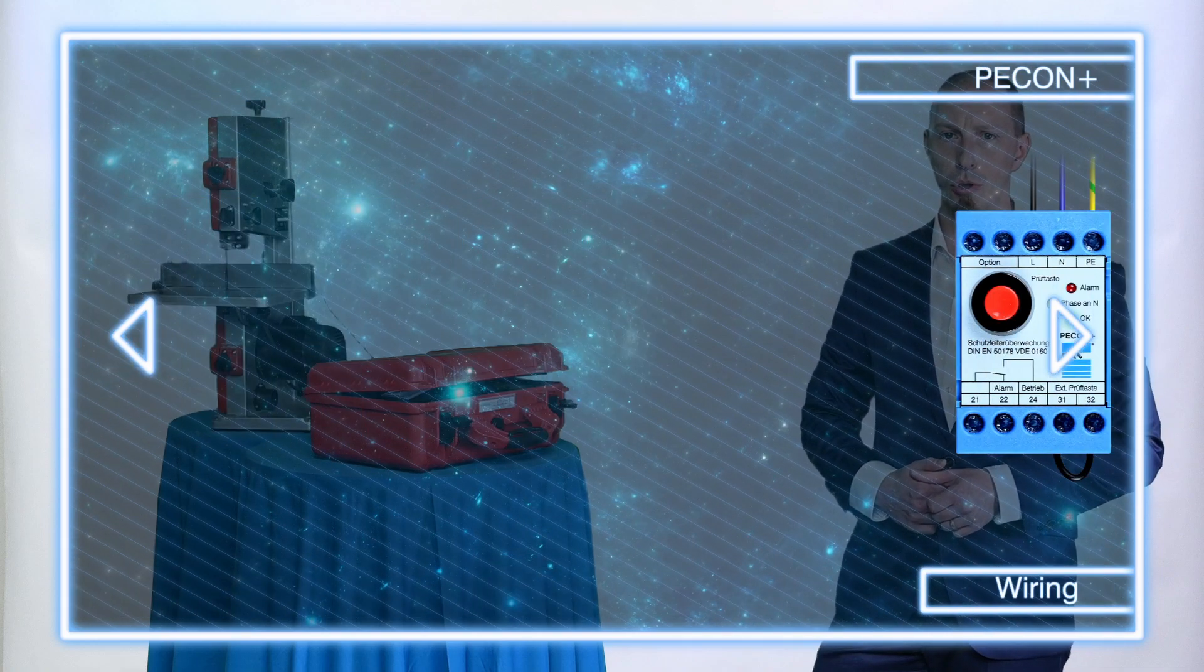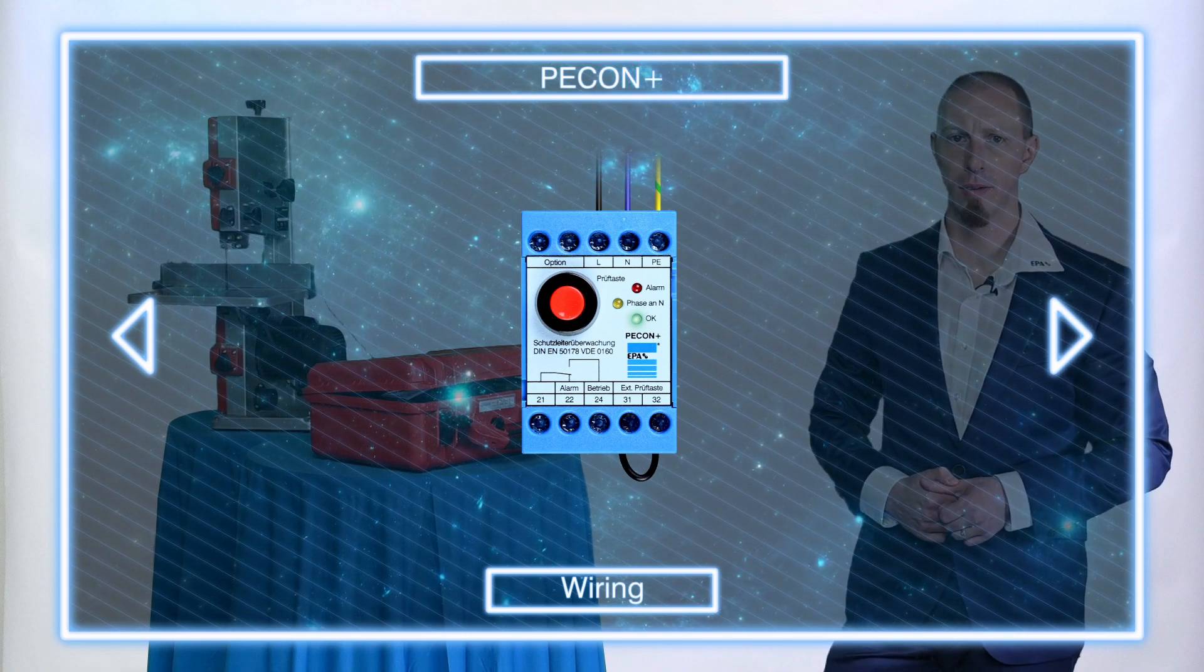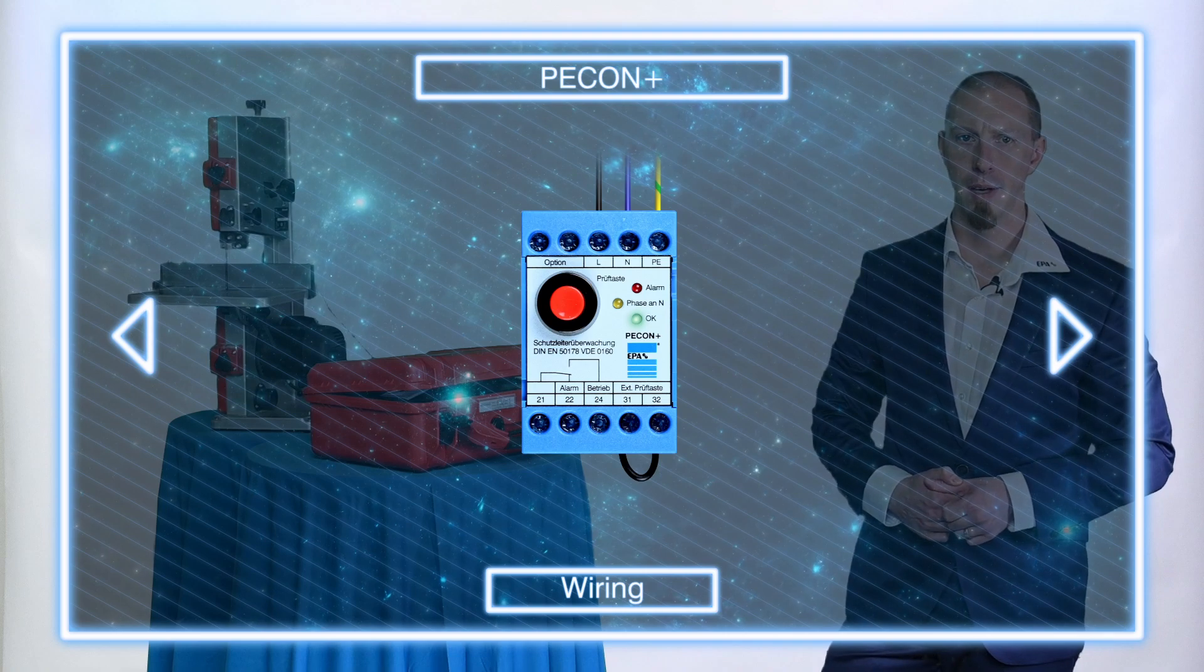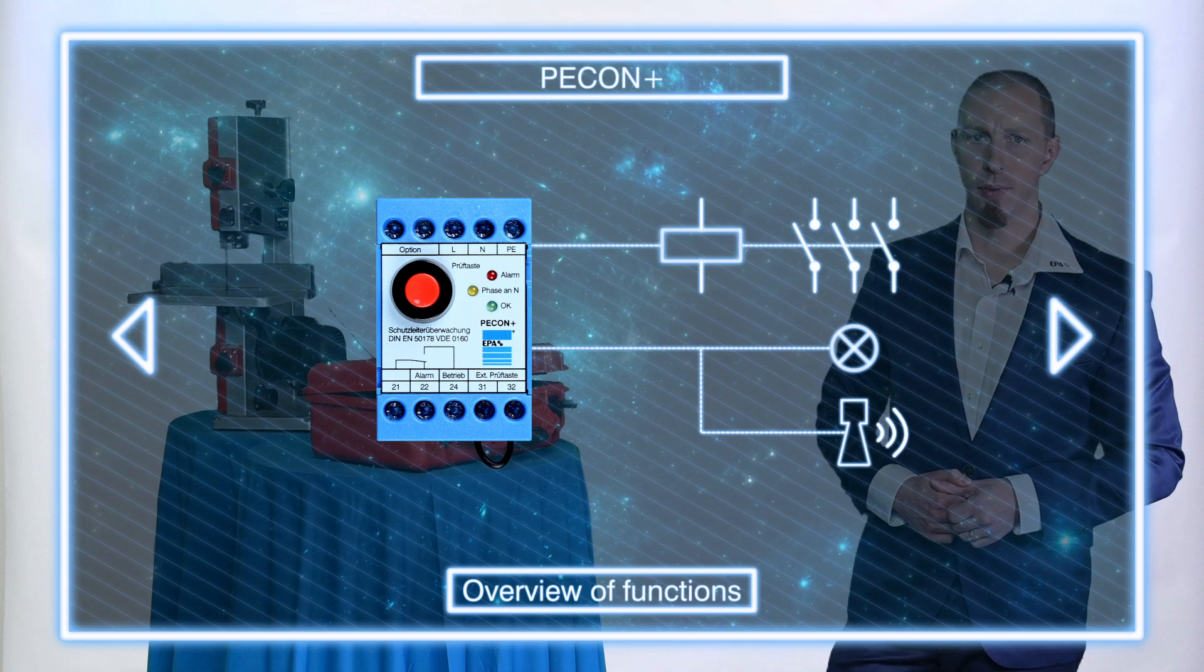The simple wiring also speaks for the pecan plus. Only one mains phase, the neutral conductor, and the protective earth conductor have to be connected so that the pecan plus can start its work. The existing potential free contacts can then be used as required for switching off or for optical and/or acoustic signaling.